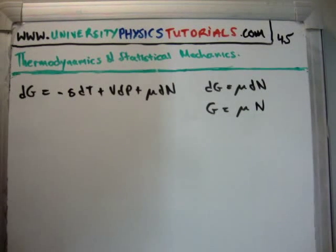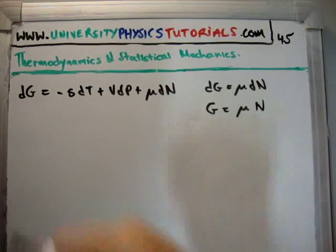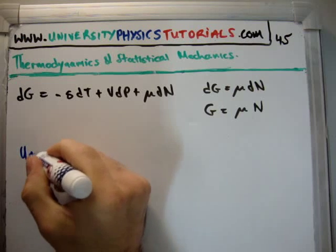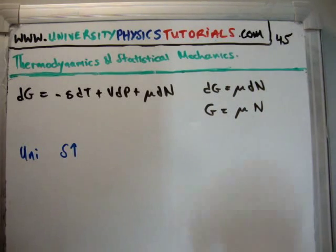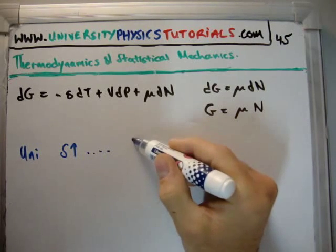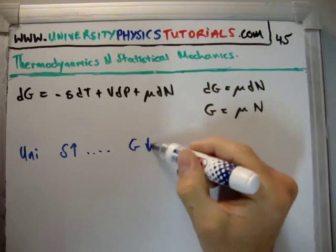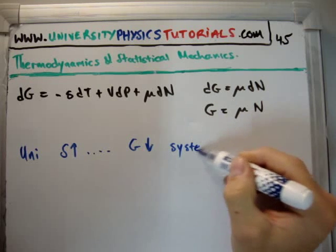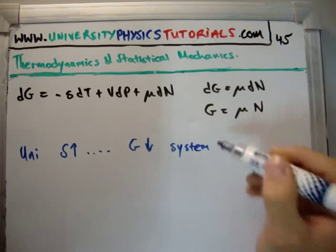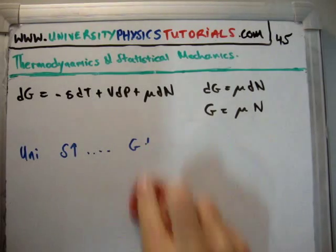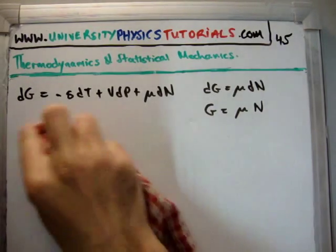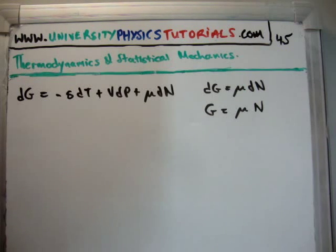Okay, so what does equilibrium mean? We know that the universe wants to increase its total entropy. But equivalent to that is minimizing the Gibbs free energy of a system. So that means that in equilibrium the Gibbs free energy of the two different phases that we're talking about should be the same.